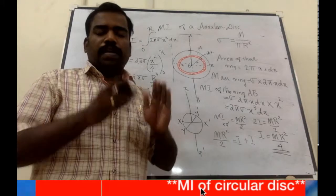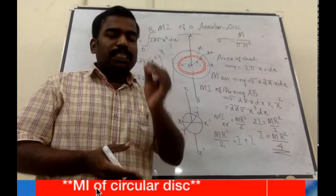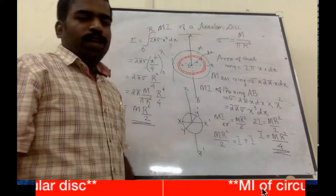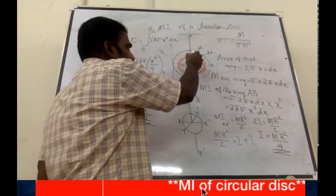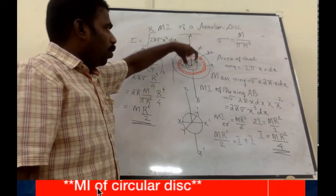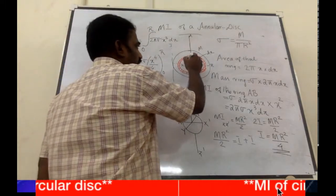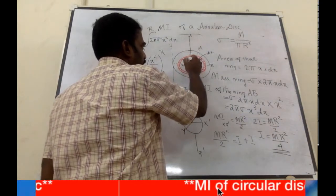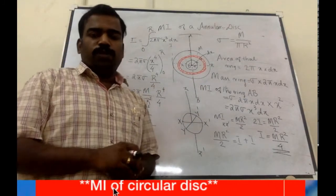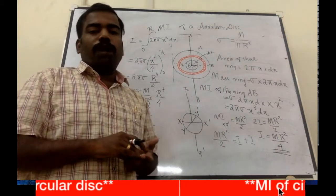Now, what is an annular disc? An annular disc has a concentric hole. This is the disc we have explained in the video. You can see a small hollow path at the center — it is not a full solid mass. This small hollow gives it a small inner radius, making it a hollow disc. This is the example for an annular disc.